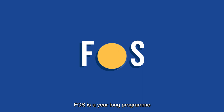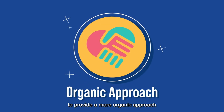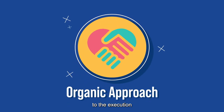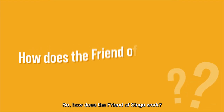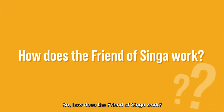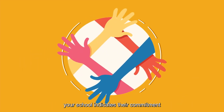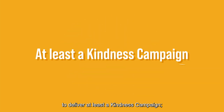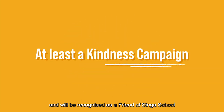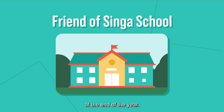FOS is a year-long program and has been remodeled to provide a more organic approach to the execution and quality of your kindness campaign. By participating in the Friend of Singa program, your school indicates their commitment to deliver at least one kindness campaign and will be recognised as a Friend of Singa school at the end of the year.